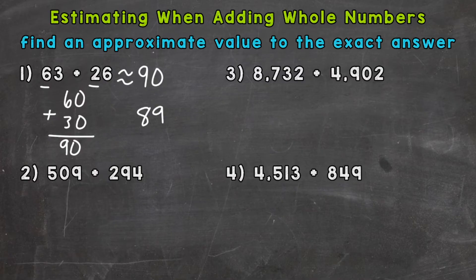So on to number two where we have 509 plus 294. So let's use front-end estimation again here and we'll take a look at the hundreds place. So 509 rounds to 500 and 294 rounds to 300. So 500 plus 300 equals 800. So 509 plus 294 is approximately 800.